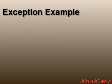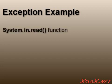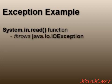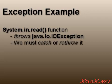Some functions that we call have a chance of throwing an exception. For example, if we call the system.in.read function to get input, this function could throw a java.io.IOException during its execution. This behavior is specified within the function itself, so we must deal with it when we call such a function.